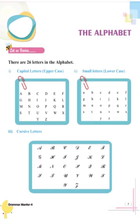Let us revise the alphabet. You all know that there are 26 letters in the English alphabet, that is A, B, C, D to Z. These letters are of 3 types: capital letters, small letters, and cursive letters.